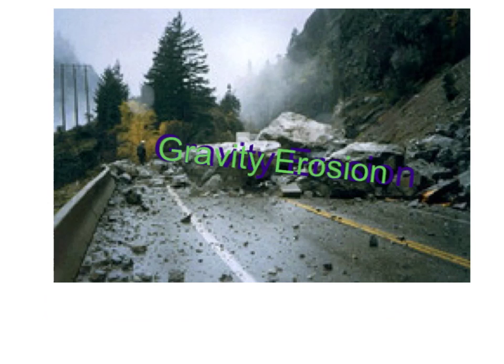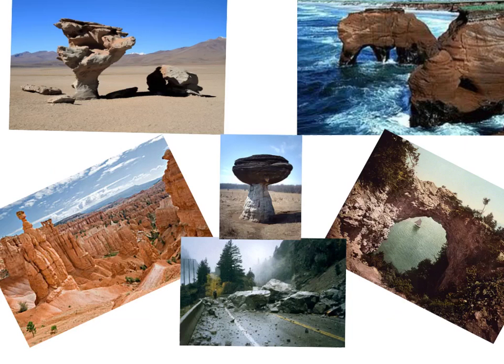Gravity erosion were formed by wind. Wind pushes what's on the ground and blows it onto the bottom of the ground. That's how gravity erosion is formed. That's how erosion was formed.